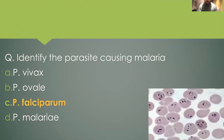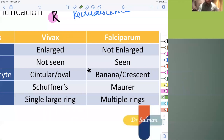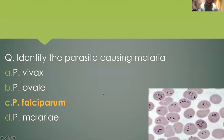The next question was: identify the parasite causing malaria. An RBC was given with some rings inside it. Multiple rings within the RBC is a classical feature of Plasmodium falciparum, whereas a single large ring is a feature of vivax. Since multiple rings were given, the answer here would be falciparum. I had given this exact image in the mock test just before your exam.